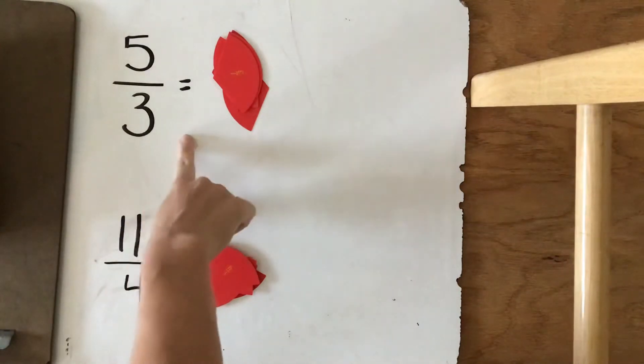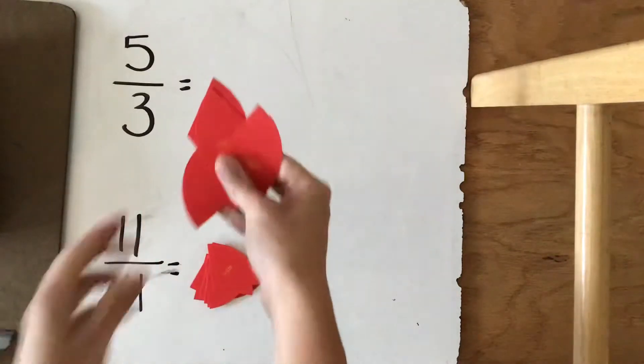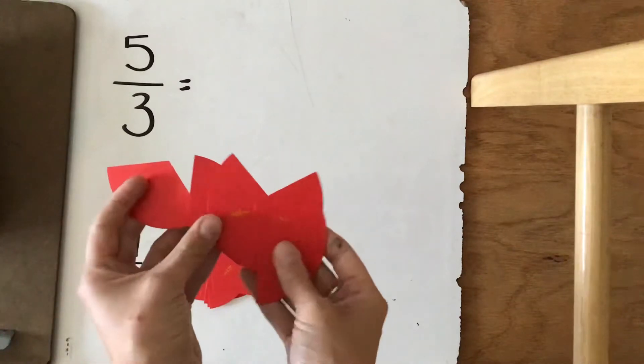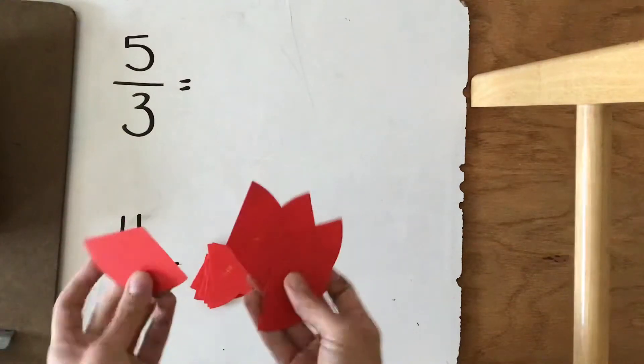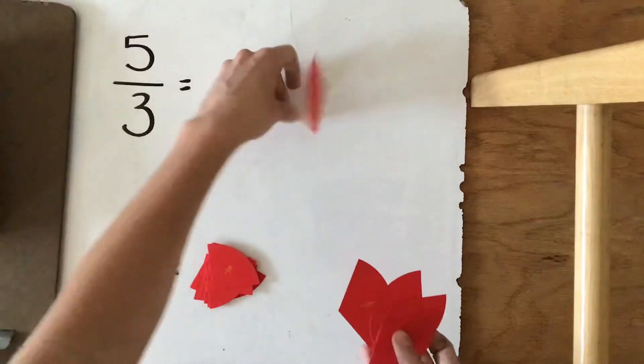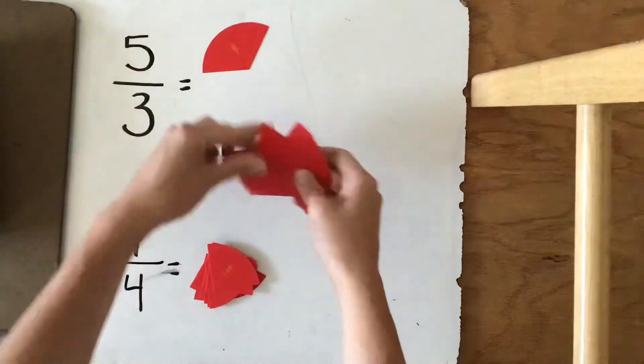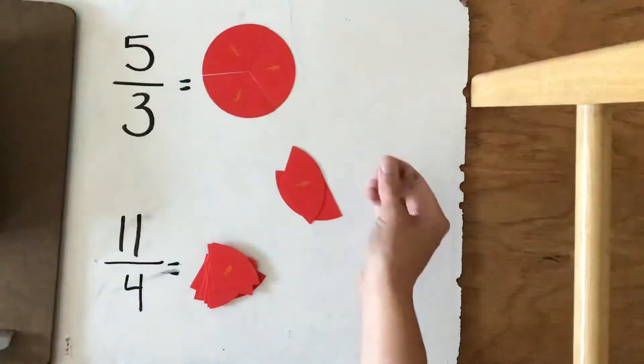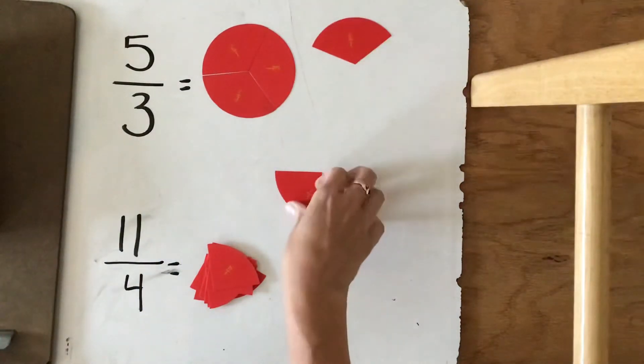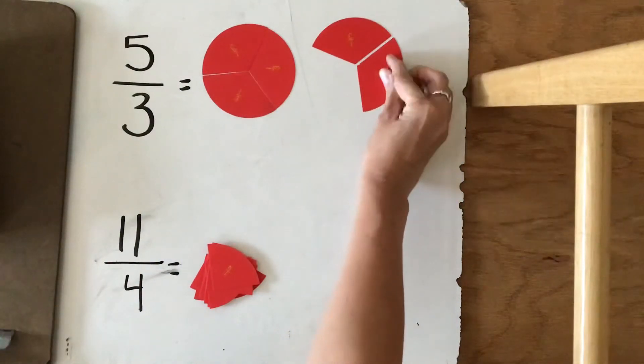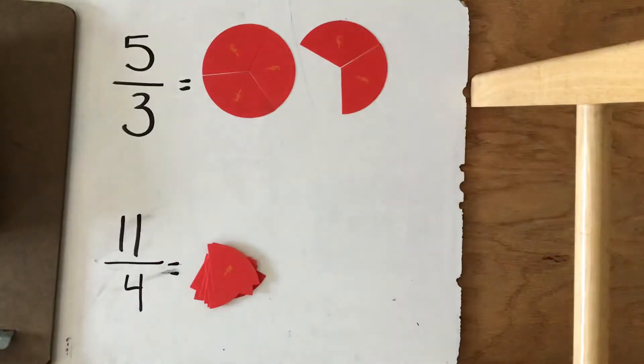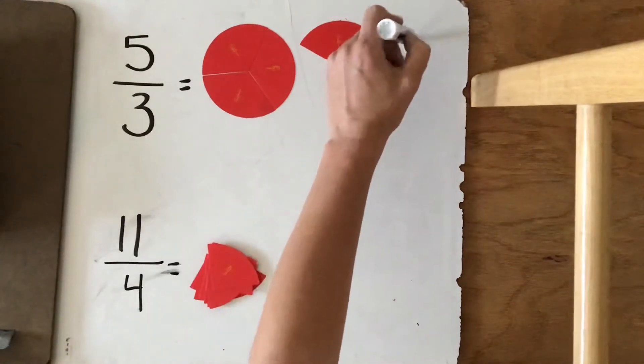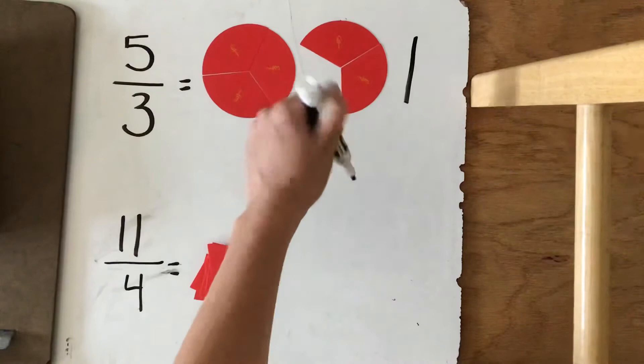So here I have 5 thirds, so I grab 5 thirds out of our fraction box. And let's make circles out of these. There's 1 hole. 2 more. So we have 1 hole plus 2 more thirds.